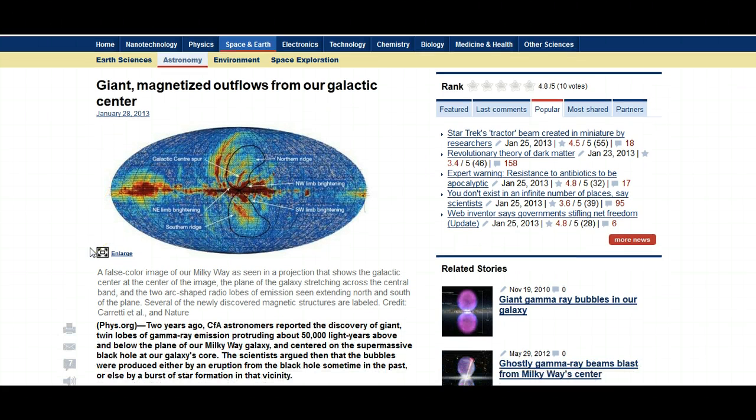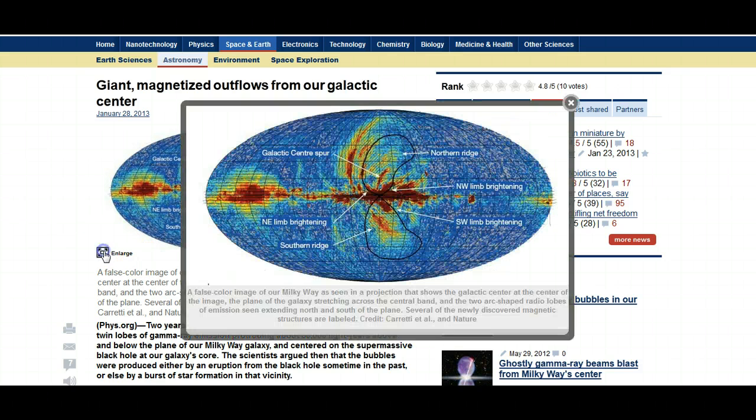It's saying that this is an image that is showing our Milky Way in false color, and it's also giving us a good indication of these magnetic outflows which I've seen here and here. And I must say that this image really reminds me of when you have metal filings and you use a magnet to move them around.